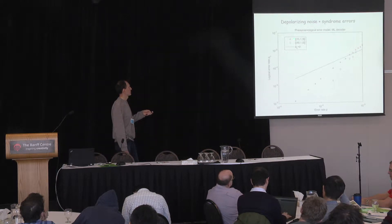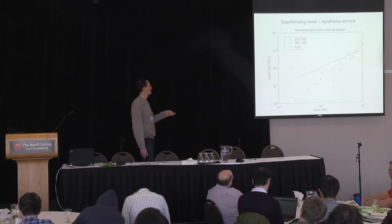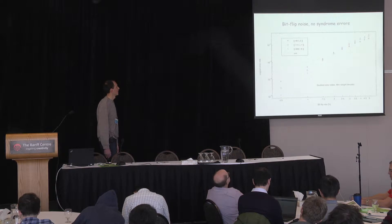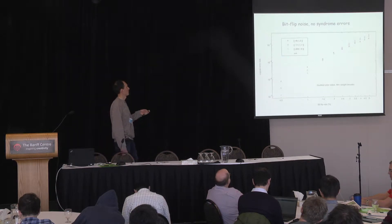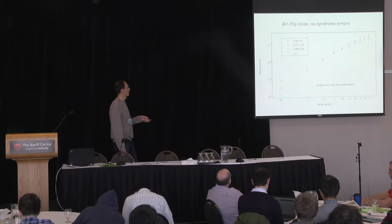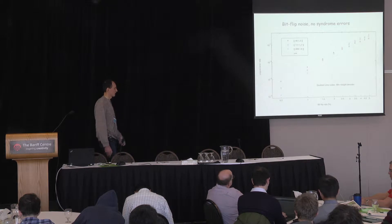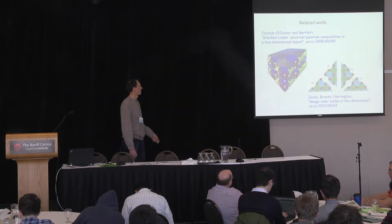This is only for distance 3 and distance 5 codes. You can see that the distance 5 code is slightly better than distance 3, which looks encouraging. We also looked at a noise model when we don't have syndrome errors, and again, for small error rates, increasing the code distance seems to help.